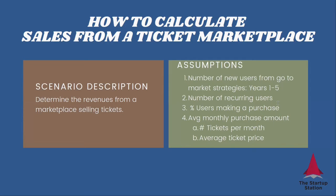Then we need to know what percentage of users are going to be recurring. Initially, those assumptions will be based on an industry standard. As you get data for your company, you can replace it with real data. We also need to estimate the percentage of users that are going to make a purchase, and then the average monthly purchase amount, which will be a combination of the number of tickets per month and the average ticket price.